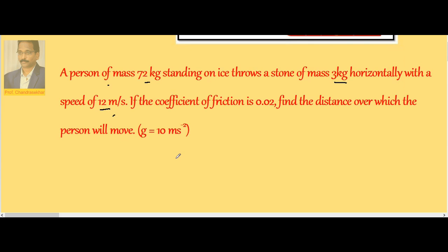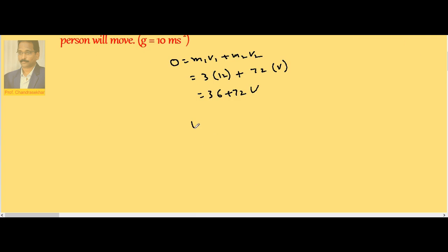Throwing is an internal phenomenon, so according to law of conservation of momentum, total momentum before is 0. So it is equal to m1 plus m2: m1 is 3 kg mass at 12 meter per second, m2 is 72 kg mass at velocity v. So 36 plus 72v, therefore v is equal to minus 36 by 72.